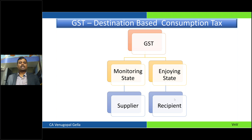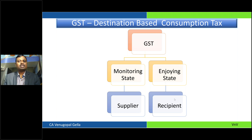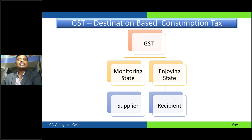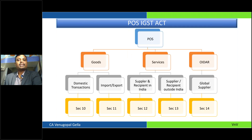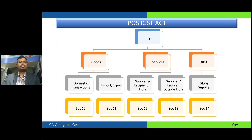Wherever the supplier is situated, that state would do the monitoring. So the producer states would have a lot of administration and the consumer states would have a lot of GST revenue. What becomes very important is the state to which the revenue goes, and that is purely determined by place of supply. So place of supply is a prominent chapter in GST.